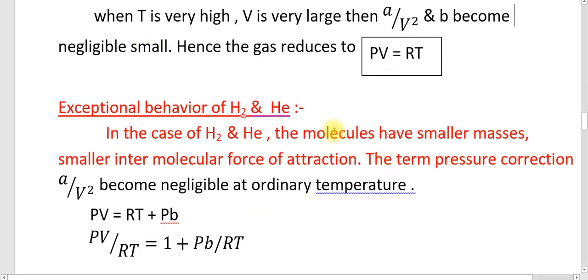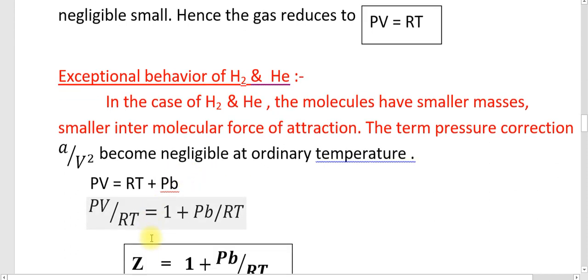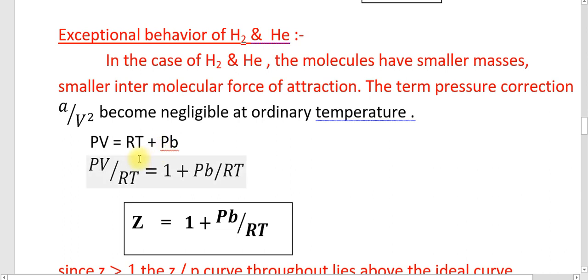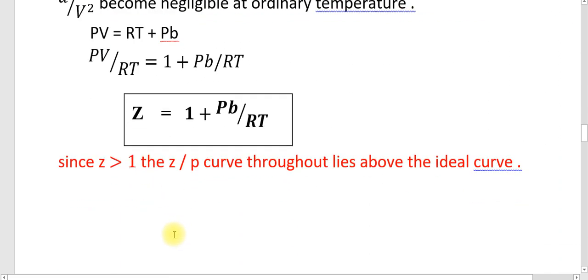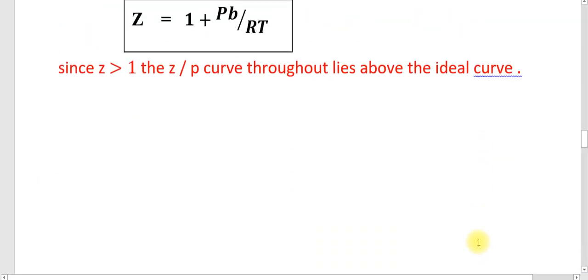The exceptional behavior of hydrogen and helium: these gases have small masses and therefore smaller intermolecular forces of attraction. Therefore, the pressure correction term A by V square becomes negligible at ordinary temperature. The Van der Waals equation reduces to PV equals RT plus PB, giving Z equals 1 plus PB by RT, so the compressibility factor is greater than 1. That is why the Z versus P curve for H₂ and helium lies above the ideal curve throughout.